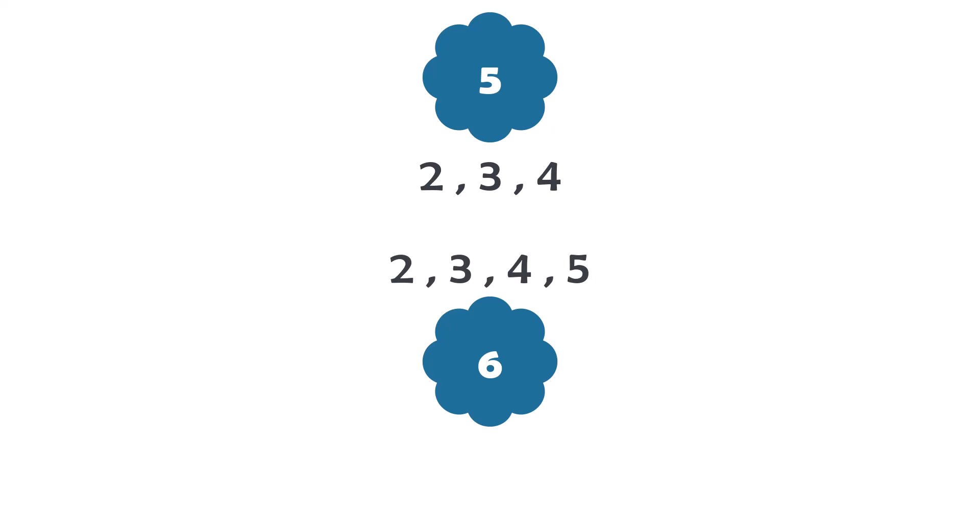In short, prime numbers are special whole numbers that can only be divided evenly by 1 and themselves. Let's first try to check some numbers if they are prime numbers manually.